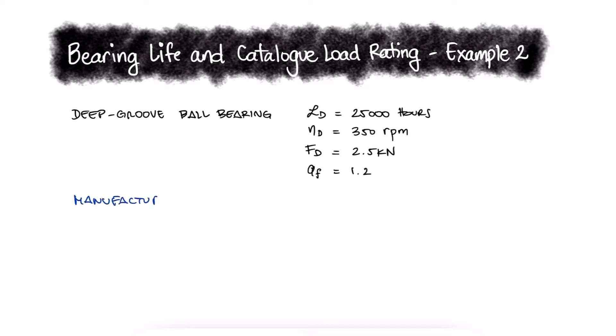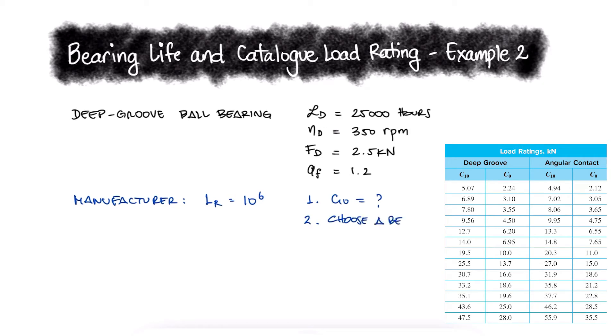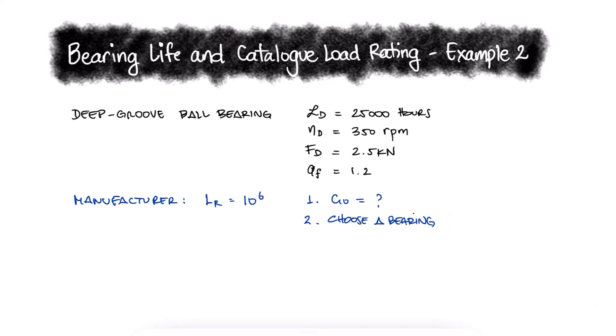If a manufacturer rates its bearings for 10 to the 6 cycles, what should the catalogue rating C10 be, which deep groove ball bearing would you choose from the available options, and with the bearing you selected, how many hours of life would this bearing actually have?